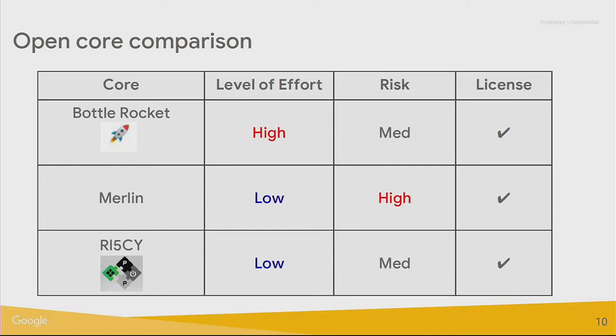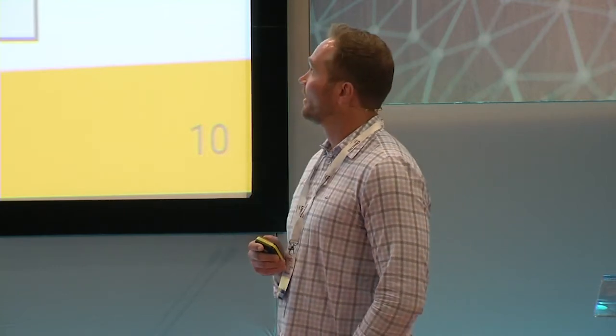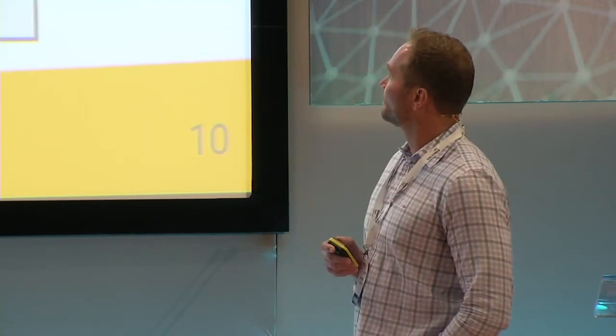Merlin we considered a lower level of effort, since Tom is on our team — he has intimate knowledge of the design, could do a fair bit of the integration, and we could just go ask him if we had any issues. The risk, however, was high. Tom did a really good job writing the RTL — it's high-quality stuff — but this would be the first time this core was utilized and we would have to do a fair bit of testing ourselves. Tom offered this core under Apache 2.0.